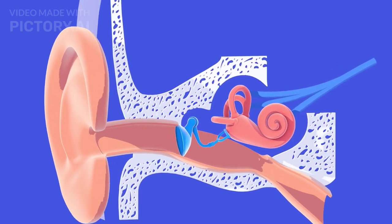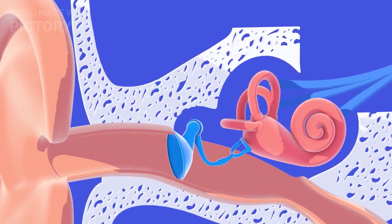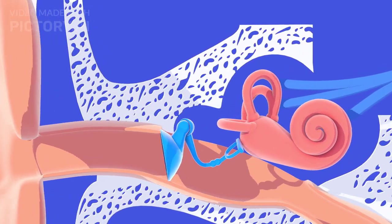Behind the eardrum lies the middle ear, which houses three tiny bones known as the ossicles: the malleus or hammer, incus or anvil, and stapes or stirrup.